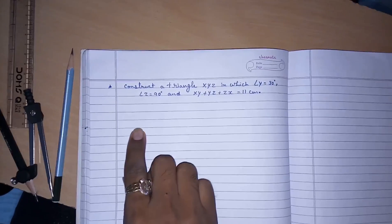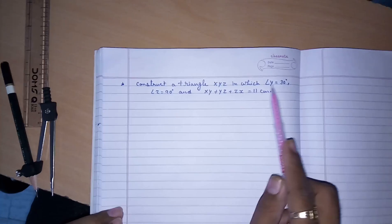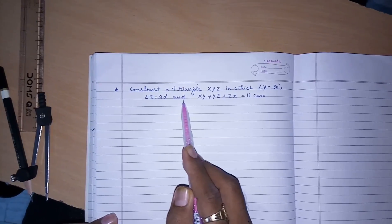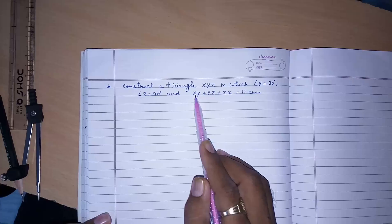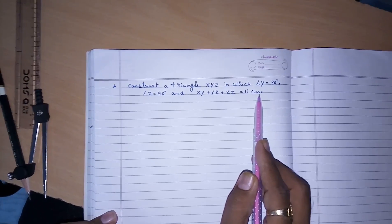Hello friends, today we are going to study about constructing a triangle XYZ in which angle Y is equal to 30 degrees, angle Z is equal to 90 degrees, and the sum of the three sides XY plus YZ plus ZX is equal to 11 cm.